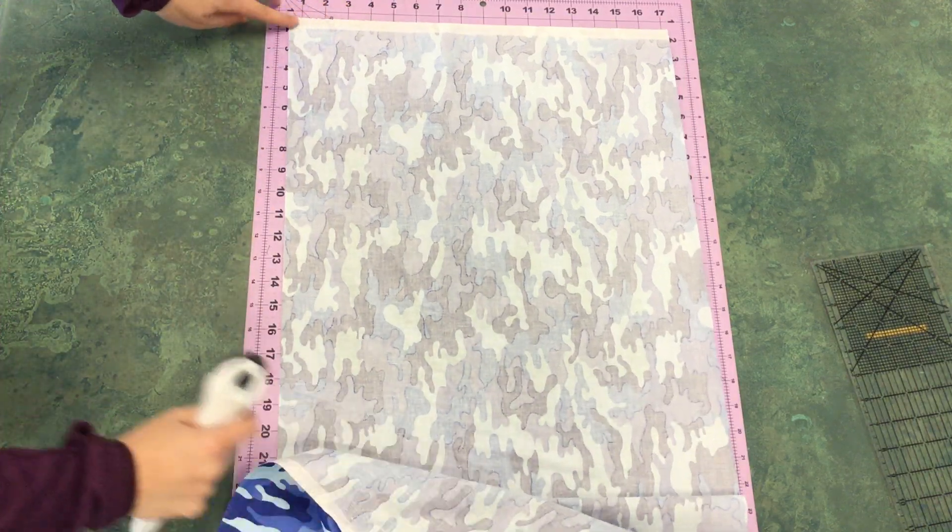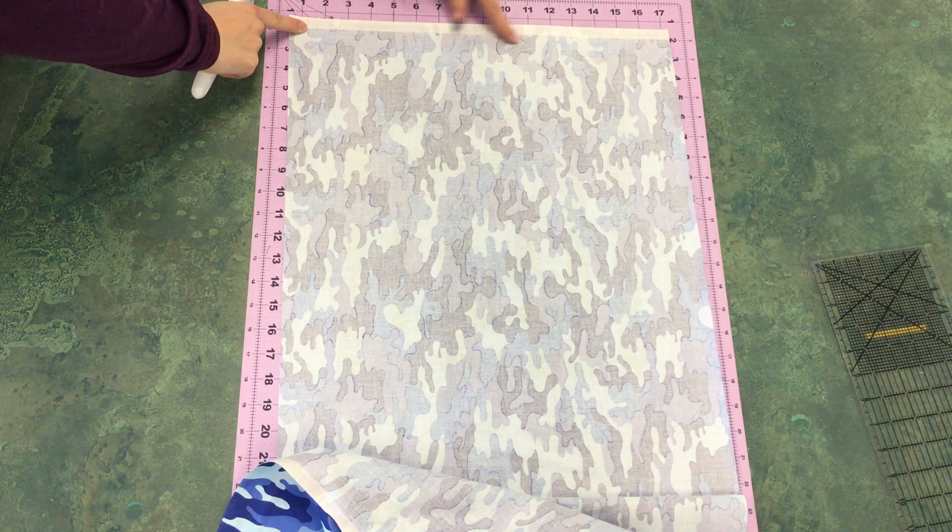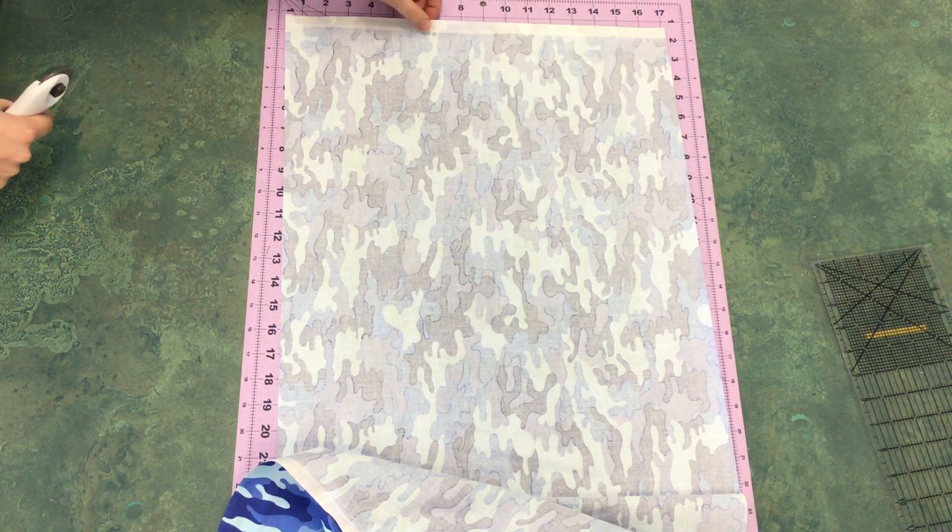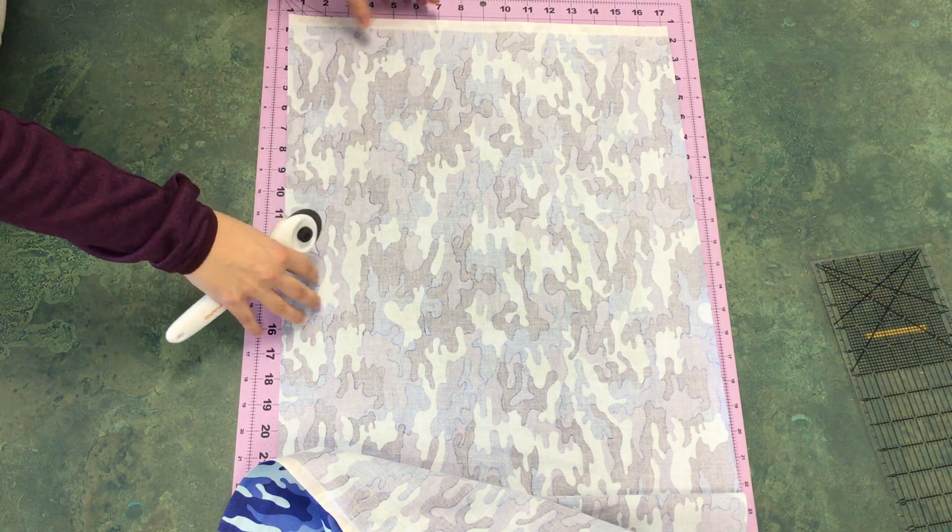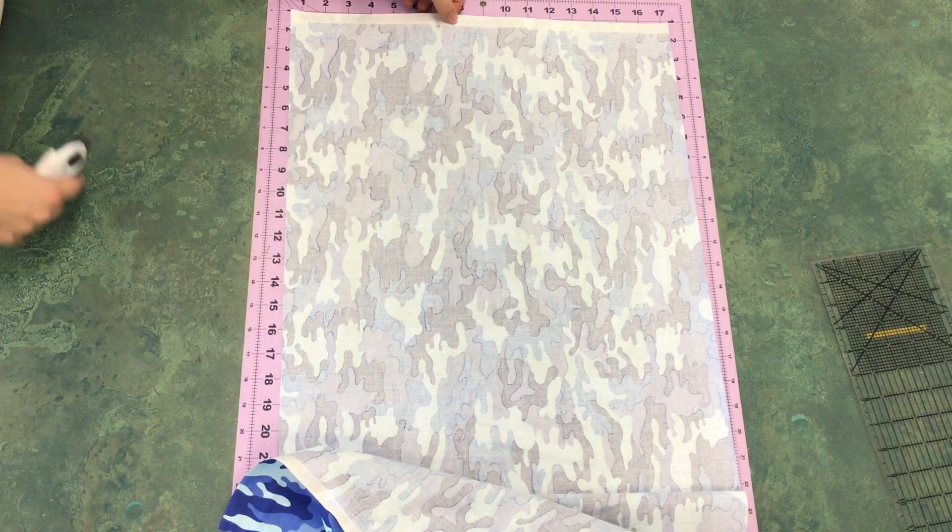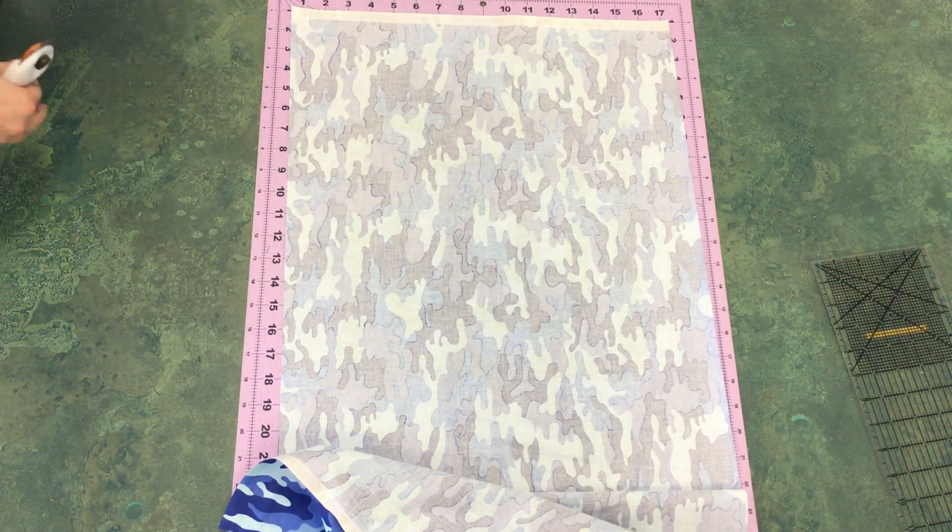Now your fabric is most likely going to have this edge on it. This is called the selvedge. This is a tightly woven edge of your fabric that's used in the construction of the actual fabric. It's a little bit thicker because this is where the machines will grab onto it and send it through looms and dyeing machines.